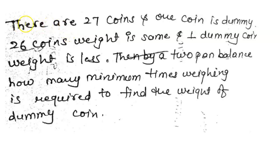Hello, this one is a memory-based question. According to this question, there are 27 coins. One coin is dummy. 26 coins weigh the same, and one dummy coin's weight is less. Then by a two-pan balance...